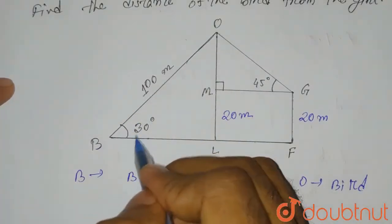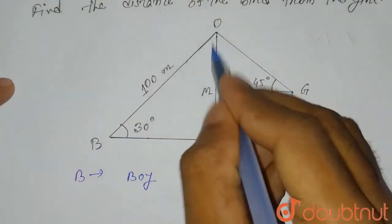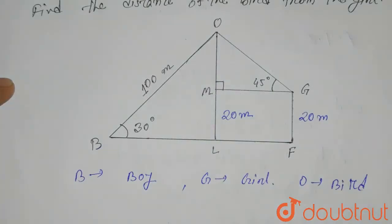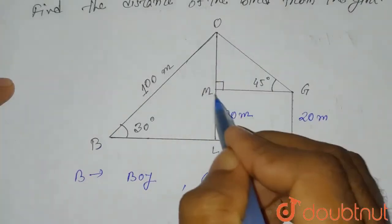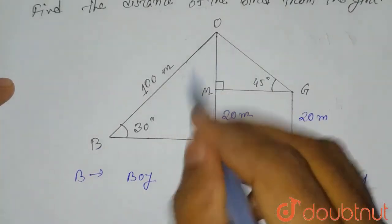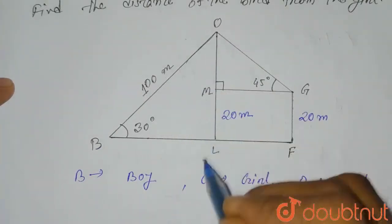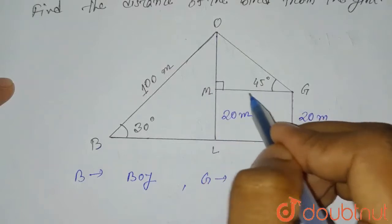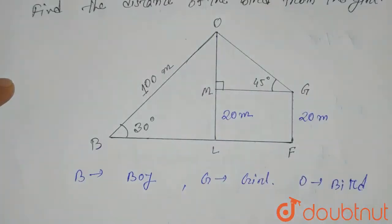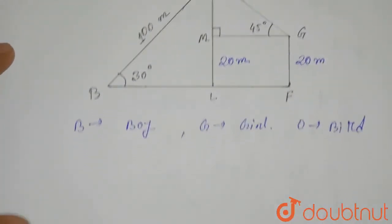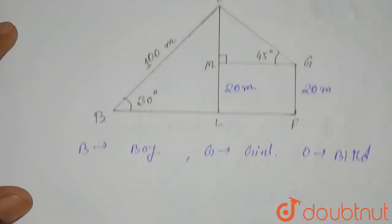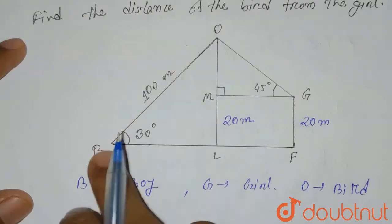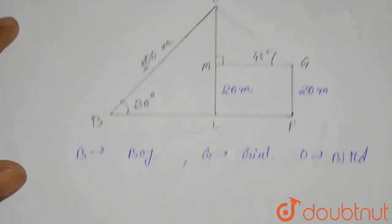First of all, we'll use sin theta to find out the value of OL. Then we'll deduct ML from OL to find OM. Then we'll apply sin theta again to find the value of OG. So first of all, in triangle OBL, what can we write?